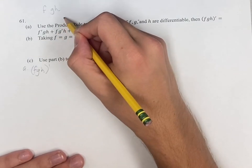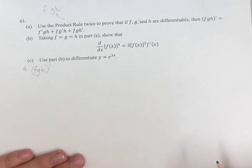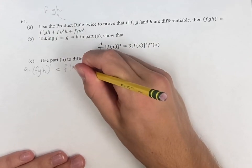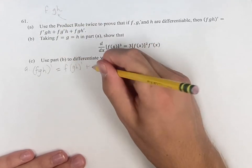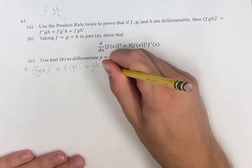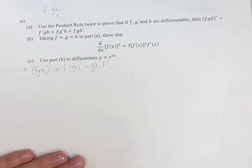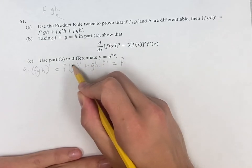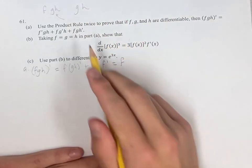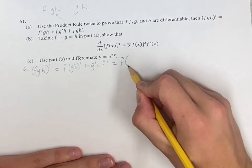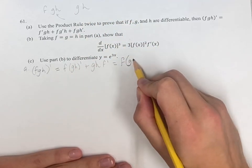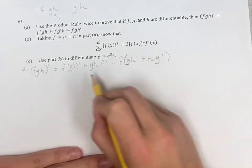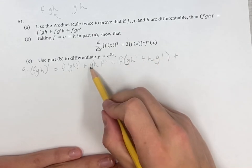We're going to have to do the product rule twice because when we're finding the derivative of gh, we're going to have to do the product rule again. So we have the first, which is f, times the derivative of the second, plus the second gh times the derivative of the first, which is f. So we have f — and this is where we're doing the product rule twice. Now the product rule we're dealing with is g and h, so we are taking the first times the derivative of the second plus the second times the derivative of the first. And then this is plus gh times f prime.